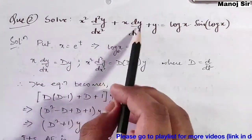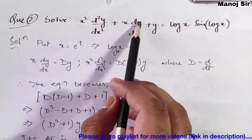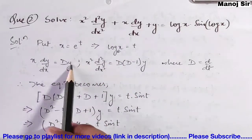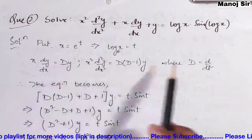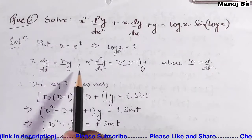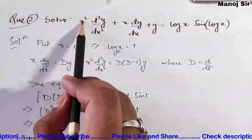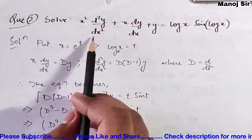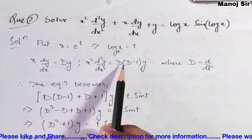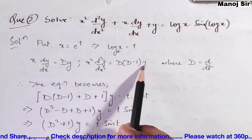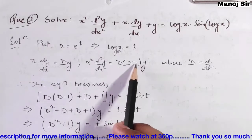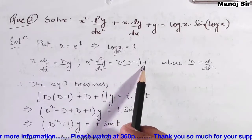We need to replace: x dy/dx with Dy, where capital D is d/dt. Similarly, x² d²y/dx² is replaced with D(D−1)y, that is D(D−1) into y.